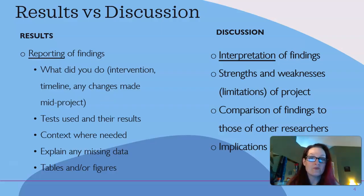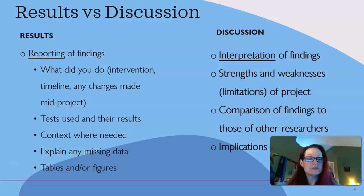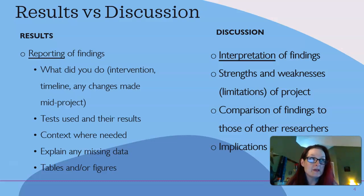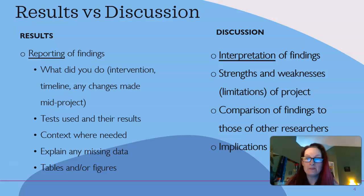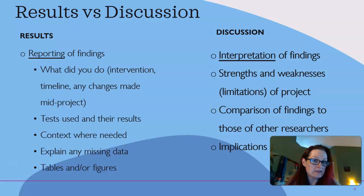A little comparison of results versus discussion, because we're going to want to have both in our paper. Results is reporting of findings — what did you do, what was your intervention, what was the timeline of your project, what were the changes you made, what tests did you use, what were the results of the tests, any context needed, anything that needed adjustment along the way, explaining missing data, and where you put tables and figures. Discussion is where you interpret your findings: strengths and weaknesses, limitations, comparison to other researchers' findings, and implications — the so what question. Now that we know all this, what do we do with it?